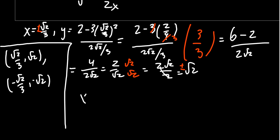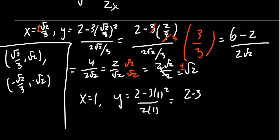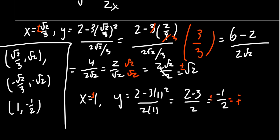When x equals 1, y equals (2 minus 3·1²) over (2·1) equals (2 minus 3) over 2 equals negative 1/2. So we get the solution (1, −1/2). When x equals negative 1, the negatives give us y equals positive 1/2, so the solution is (−1, 1/2). So combining substitution and elimination to solve this nonlinear system gives us four solutions: (√2/3, √2), (−√2/3, −√2), (1, −1/2), and (−1, 1/2).